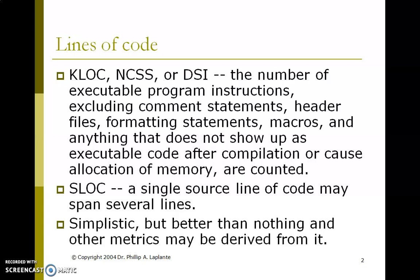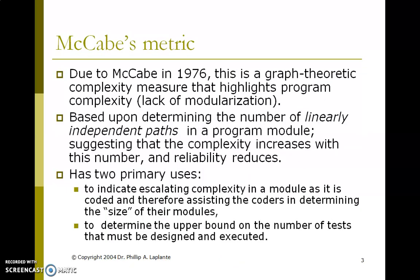Next one is McCabe's metric, invented in 1976. This is a graph-theoretic complexity measure that highlights program complexity. It measures linearly independent paths in the program model, suggesting that complexity increases with this number and reliability reduces. These are the two primary issues in McCabe's metric.